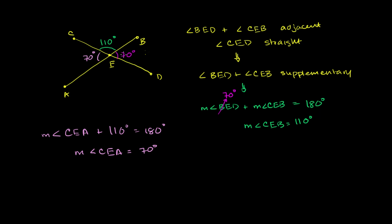And what we'll learn in the next video is that this is no coincidence. These two angles — angle CEA and angle BED — are sometimes called opposite angles, but the more correct term for them is vertical angles. We haven't proved it; we've just seen a special case here where these vertical angles are equal, but it actually turns out that vertical angles are always equal. So angle CEA and angle BED are vertical.